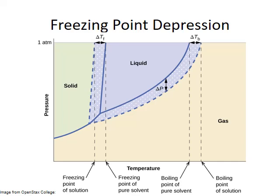This phase diagram shows that the same effect influences the freezing point as well. The solid blue line represents the phase transitions of the pure solvent, while the dashed lines represent the shift for a solution made with that solvent. The line between the liquid and gas phase for the solution is shifted lower than for the pure solvent. Because of this shift, it now intersects with the solid-gas transition line at a lower temperature, so the line between the solid and liquid phase is also shifted to lower temperatures. Boiling point is higher for a solution, while the freezing point is lower.